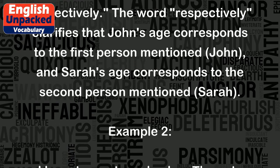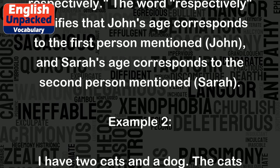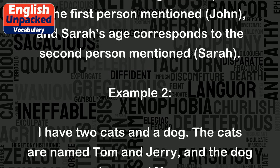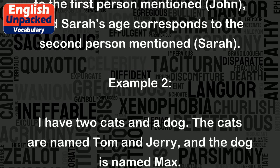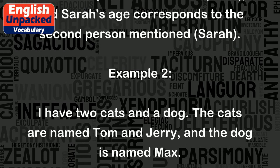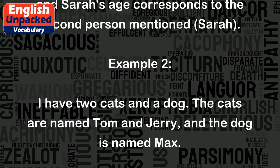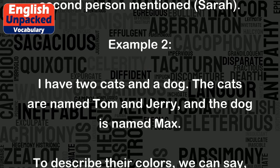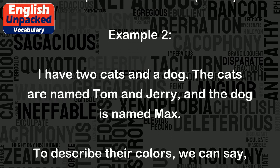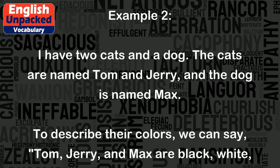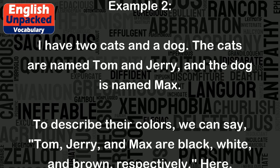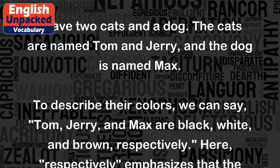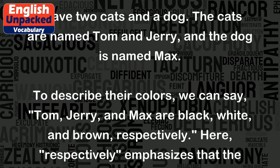Example 2: I have two cats and a dog. The cats are named Tom and Jerry, and the dog is named Max. To describe their colors, we can say: Tom, Jerry, and Max are black, white, and brown, respectively.